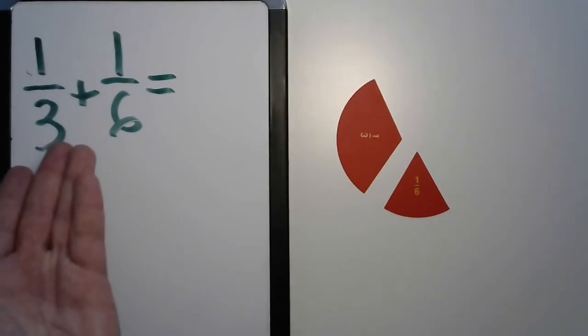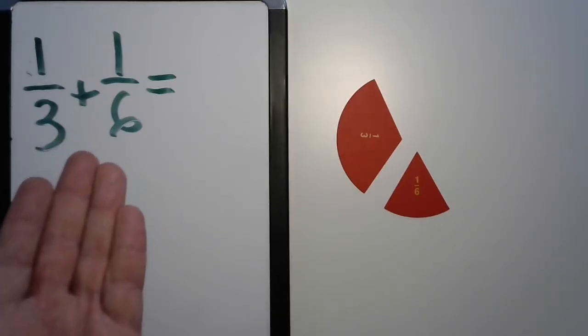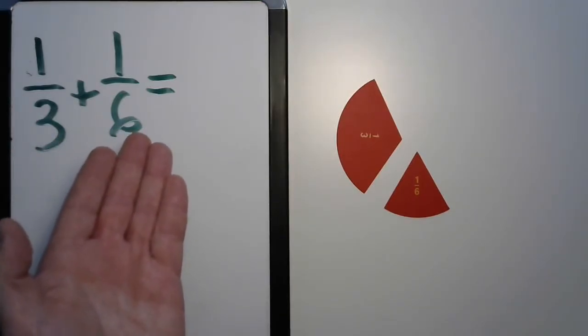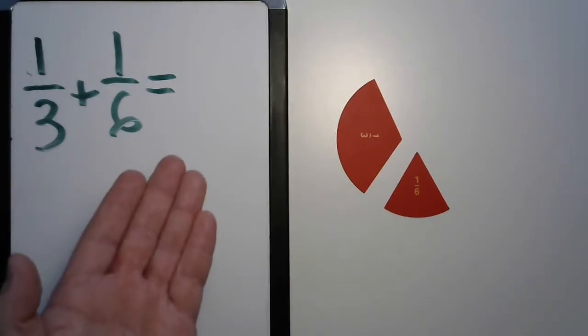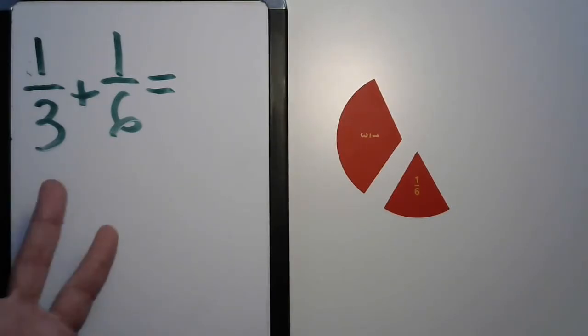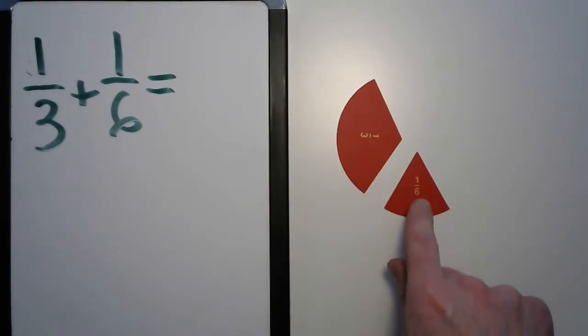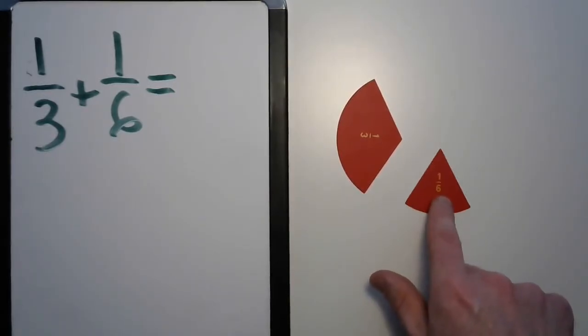We could turn our first fraction into an equivalent amount in the same family as the second. We could also try turning the second one into an equivalent family of the first, but that doesn't always work. I mean, do you think we can turn this into any thirds? Hmm. There's also a third option.